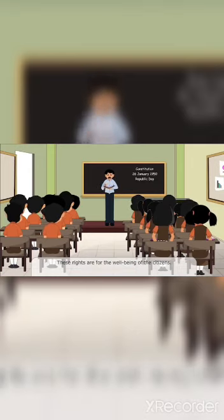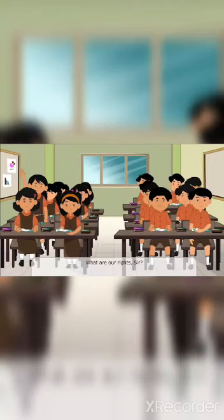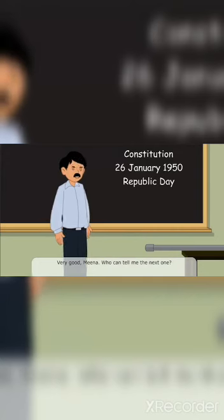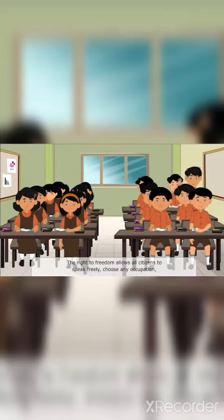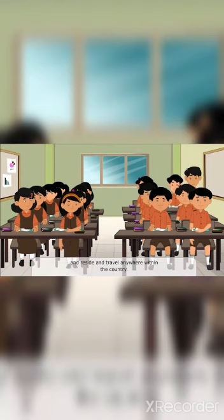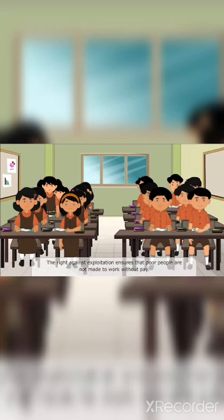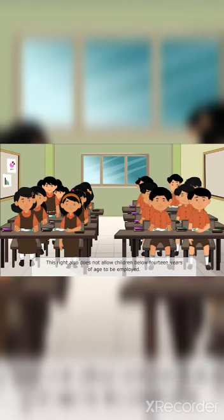What are our rights? All citizens, irrespective of their religion, caste, race, sex and place of birth, are treated as equals. The Right to Freedom allows all citizens to speak freely, choose any occupation, and reside and travel anywhere within the country. It also provides for free and compulsory education of all children between 6 and 14 years of age. The Right Against Exploitation ensures that poor people are not made to work without pay, and does not allow children below 14 years of age to work in hazardous conditions.